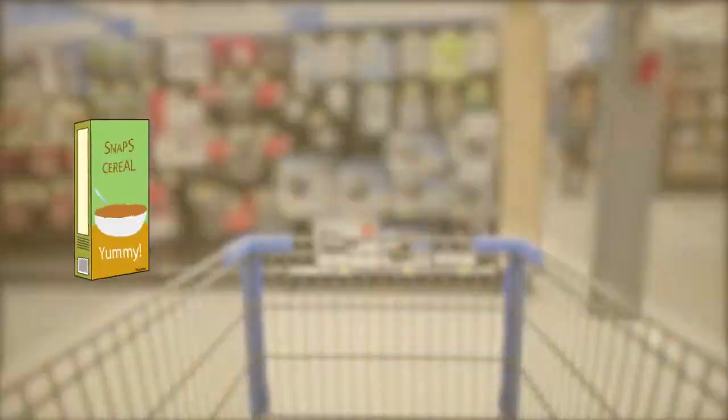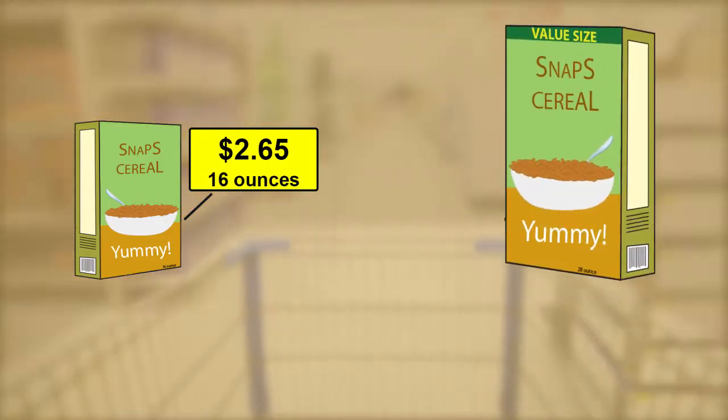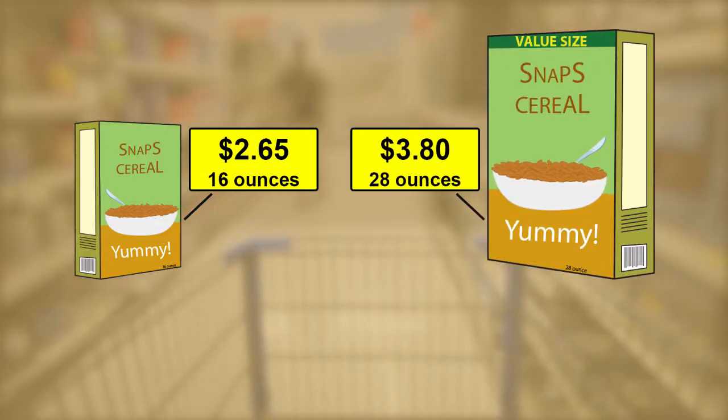Unit rates can be particularly helpful when comparing prices while shopping. For instance, what if you are trying to decide whether to purchase the smaller 16-ounce box of cereal that is on sale for $2.65 or the 28-ounce value size for $3.80?